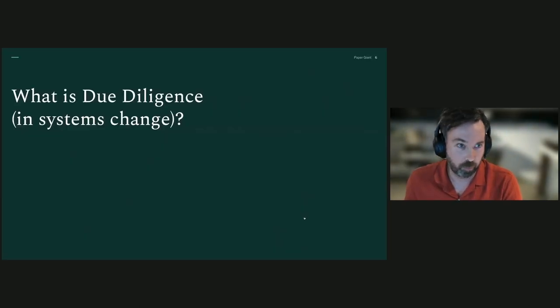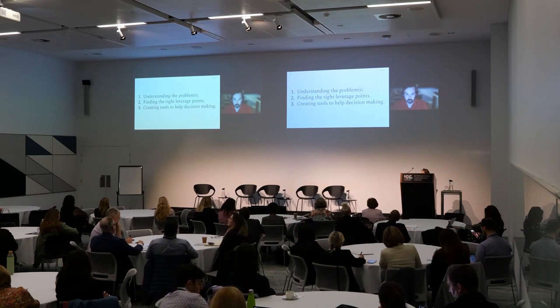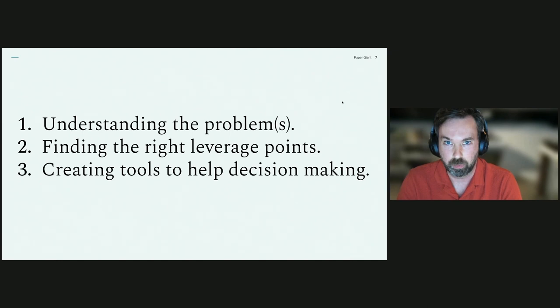But back to this question, what is due diligence in systems change? This is the answer on the page. So if you want to take a photo of something, this is the one. There's three aspects to due diligence from Paper Giant's perspective. That is, first understanding the problem or the problems. Once you do that, then finding the right leverage points within that problem and then creating tools to help decision making over various time horizons. So I'll speak to each one of these in turn now.